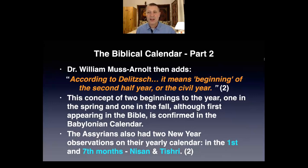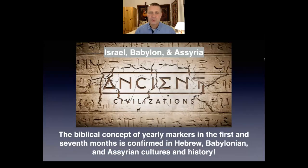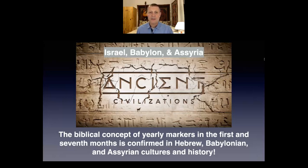The Assyrians also had two New Year observations on their yearly calendar in the first and seventh months — in Nisan and Tishri. So the biblical concept of yearly markers in the first and seventh months is confirmed in Hebrew, Babylonian, and Assyrian cultures and history. Most likely the Babylonians and Assyrians got it from the Jews, because God gave that to them. It's just great to see this consistent confirmation of two yearly markers — the first and seventh months.